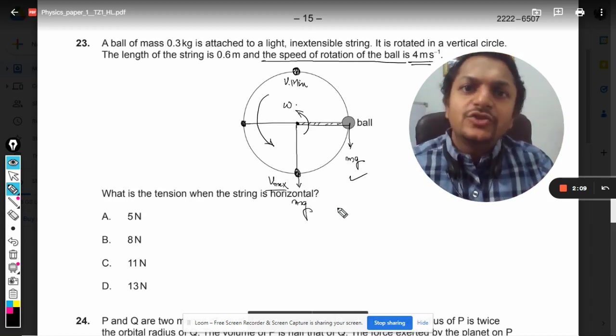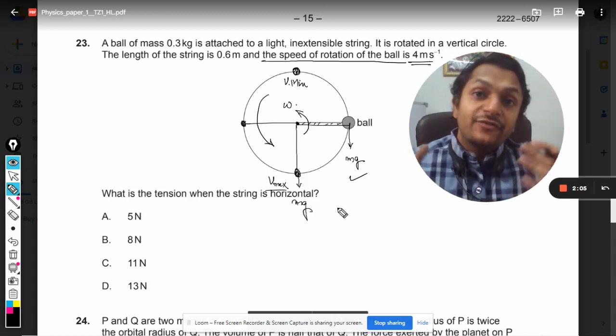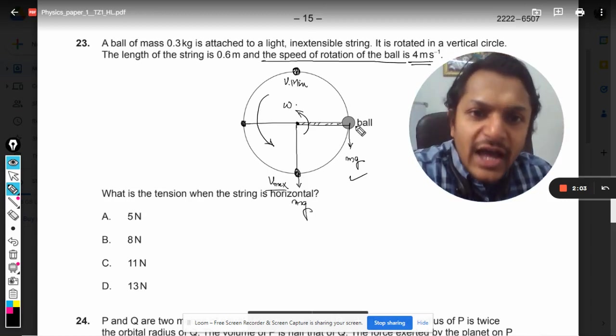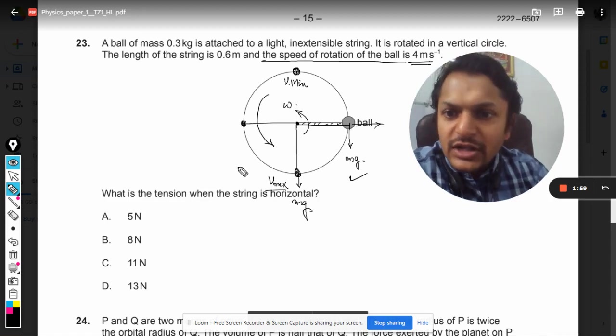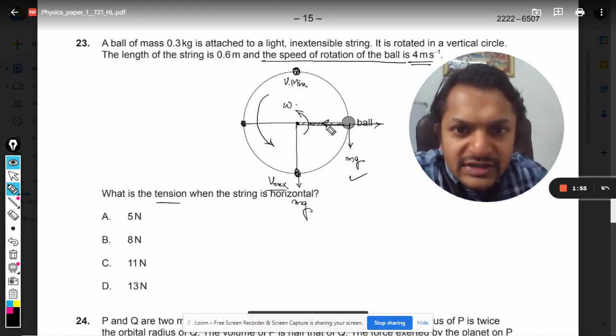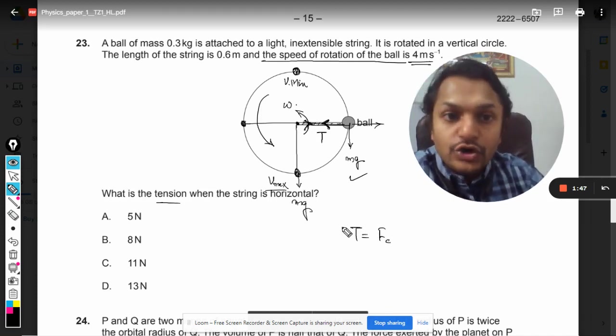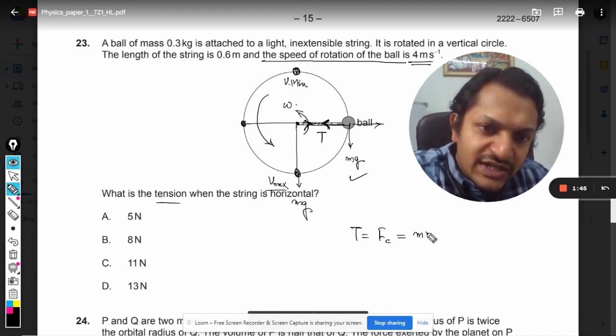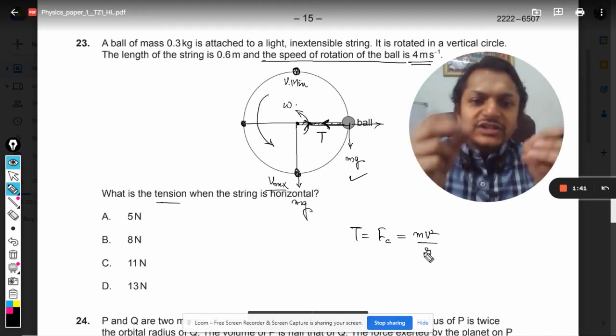So we do not need to consider weight in this. We are left only with one particular force, and that force is centripetal. The tension in the string in the inward direction, this tension will be equal to the centripetal force. Centripetal force is given by the formula mv² divided by r. So we just apply this formula and we get the answer.